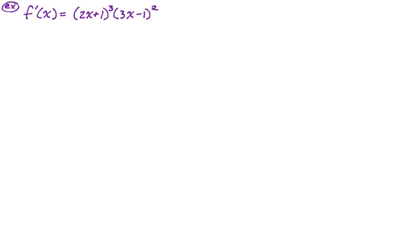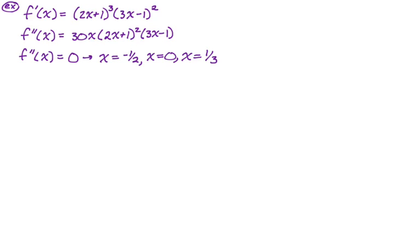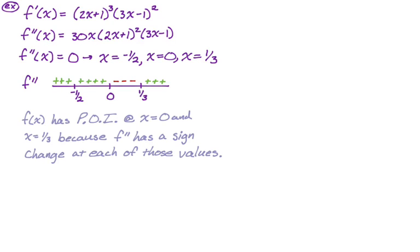We are given that f prime equals the quantity (2x + 1) cubed times the quantity (3x − 1) squared. I found f double prime and factored it: f double prime equals 30x times (2x + 1) squared times (3x − 1). Now I make a sign chart. The zeros of f double prime are x equals negative one half, x equals zero, and x equals positive one third. Testing the regions, the sign chart goes positive, positive, negative, positive. So f of x has points of inflection at x equals zero and x equals one third because f double prime has a sign change at each of those values. That's the entire answer.